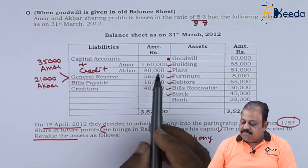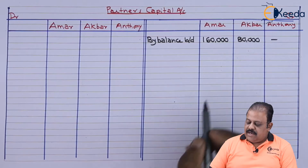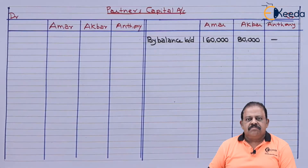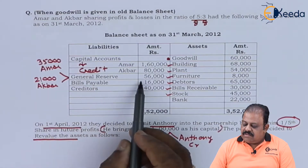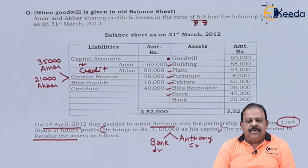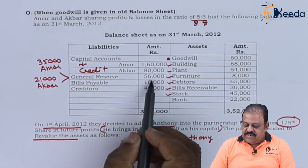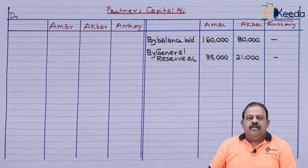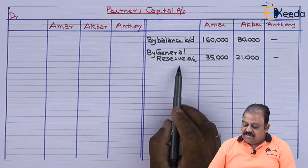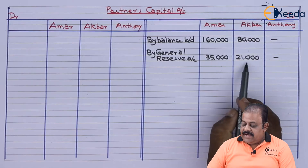We have capitals of Amar and Akbar: 1,60,000 and 80,000. These will be credited to their capital accounts by balance brought down — Amar 1,60,000, Akbar 80,000. General reserve 56,000 will be divided among old partners in the old ratio of 5:3. Partners' capital accounts credited by general reserve account — Amar 35,000, Akbar 21,000.